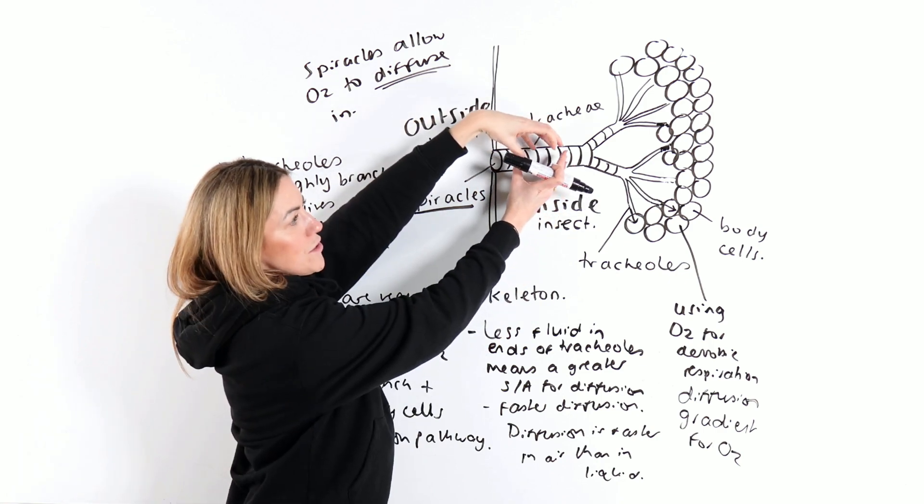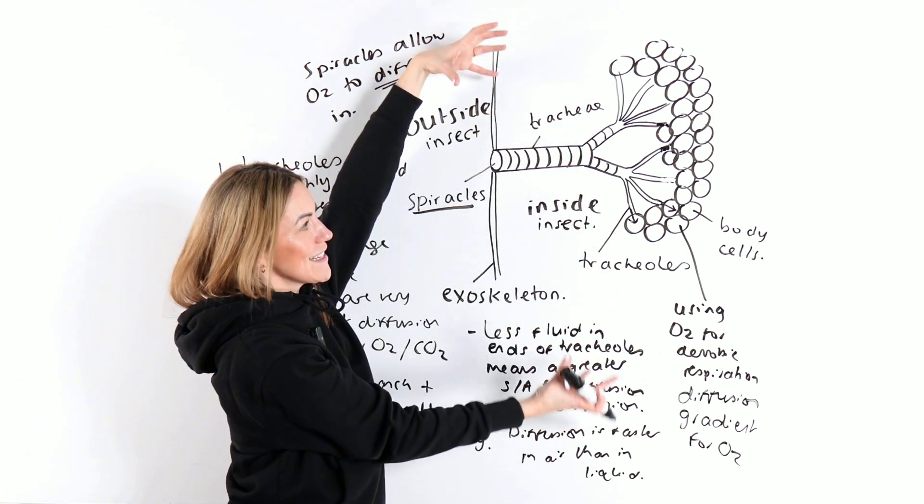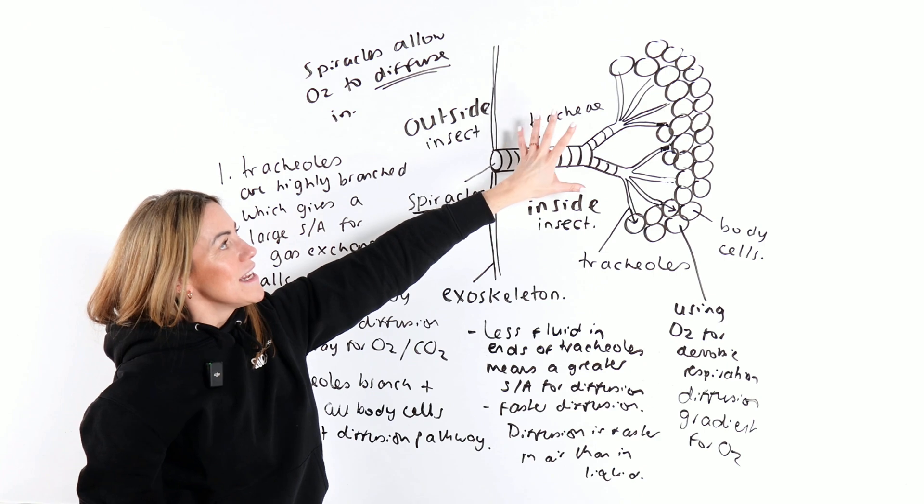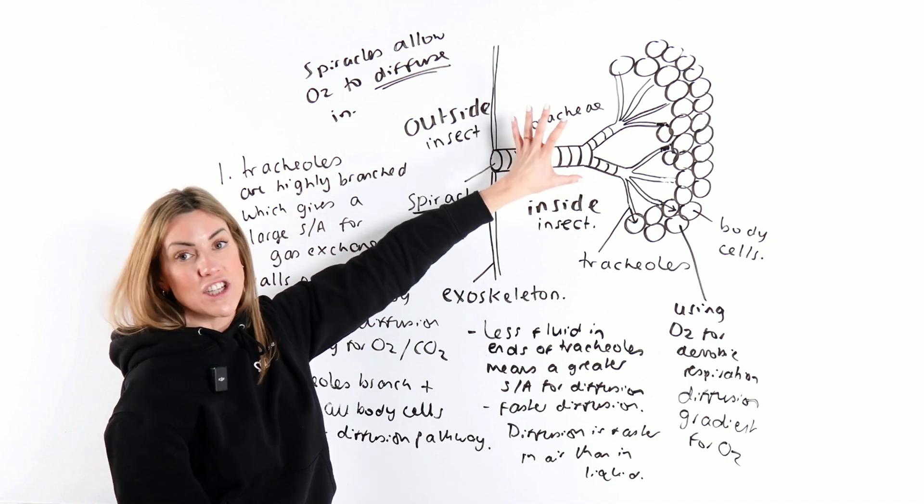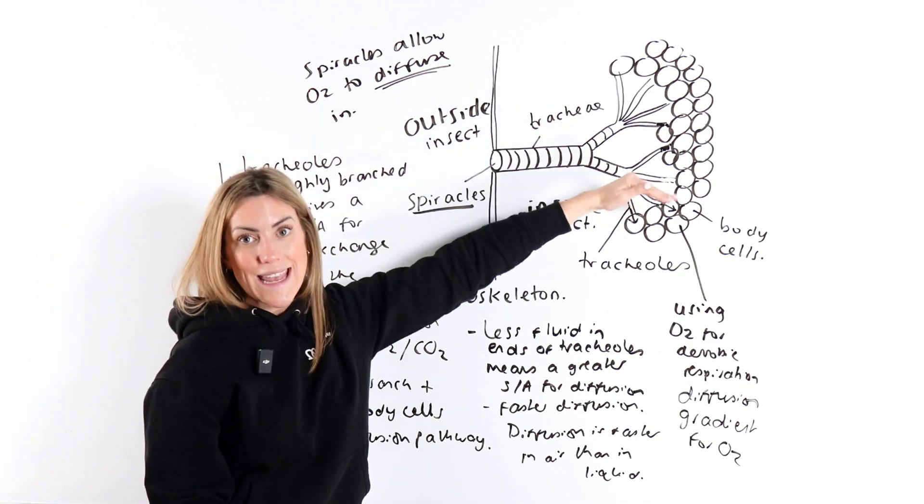When the abdominal muscles relax, if you imagine them relaxing, then the tracheal network gets wider. The volume increases, the pressure decreases and air is drawn in.